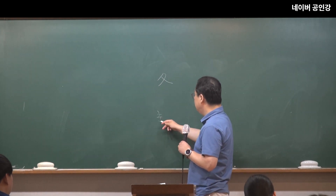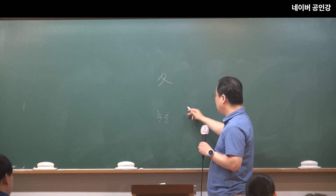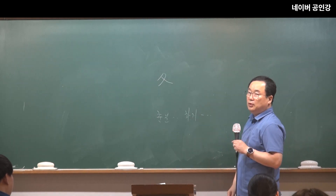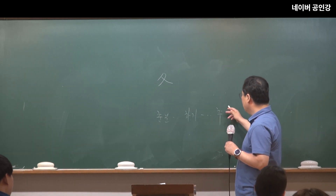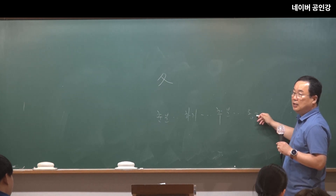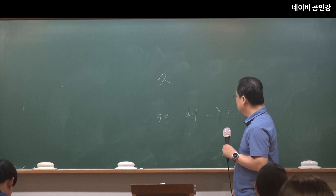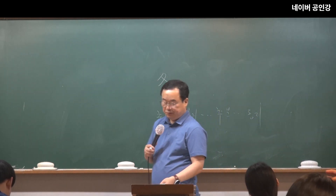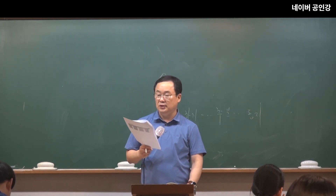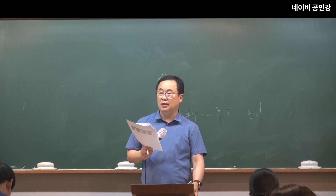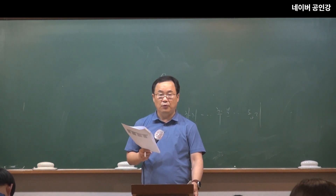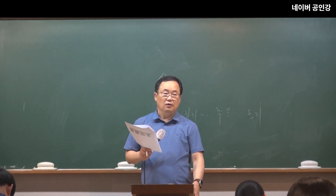밤과 낮이 같을 때가 춘분. 춘분 기점으로 점점 낮이 길어지면서 하지가 됩니다. 그다음에 점점 낮이 짧아져서 낮과 밤이 같아질 때가 추분이야. 추분이 지나면 밤이 늘어나서 밤이 가장 길 때가 동지인 거예요. 절기상 춘분, 하지, 추분, 동지. 그래서 겨울동. 엄동설한, 아주 추운 겨울과 눈이 차가운 그런 계절이 소위 겨울이라고 부를 수 있죠.